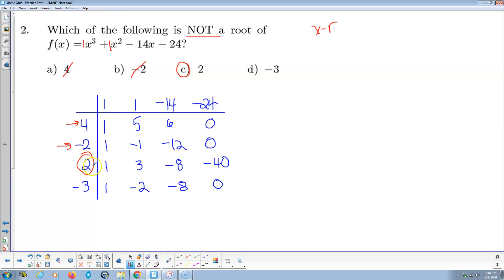2, bring the 1 down. 2 times 1 is 2. Plus 1 is 3. 2 times 3 is 6. Minus 14 is negative 8. 2 times negative 8 is negative 16. Added to negative 24 is negative 40. That's the guy that's not the root.